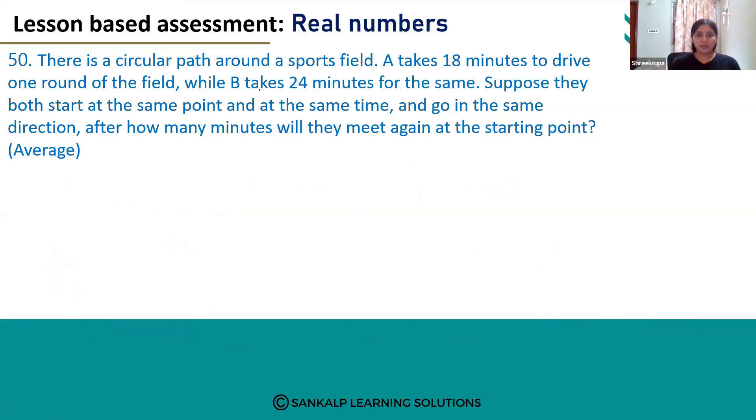There is a circular path around a sports field. A takes 18 minutes to drive one round of the field while B takes 24 minutes for the same. Suppose they both start at the same point and at the same time and go in the same direction. After how many minutes will they meet again at the starting point?